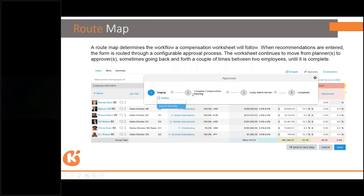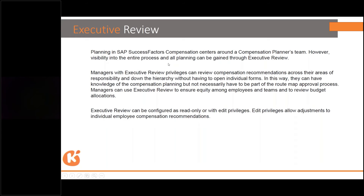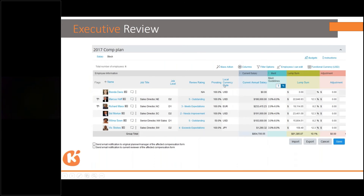Then there is a route map, which is basically a workflow. You can see the staging detail — compensation planning, admin review, completed section, and then executive review. Executive review allows people with that permission to download compensation data to an Excel sheet, make changes, and upload it directly back into the system.